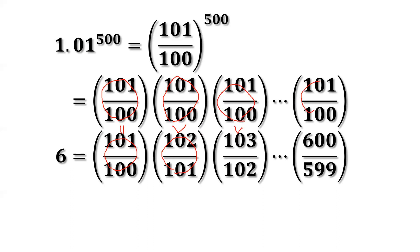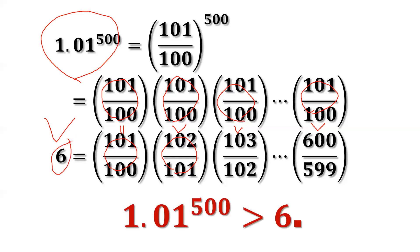And similarly, this is bigger than this. So now, by comparing this product with this product, all top items are bigger than or equal to the bottom part. So here, this is bigger than this one. So this is bigger than six. This is our result. 1.01 to the power of 500 is bigger than six.